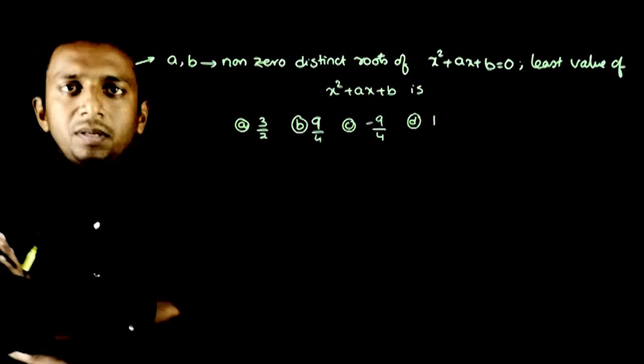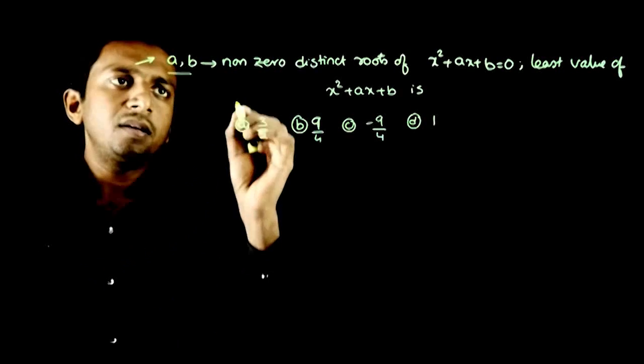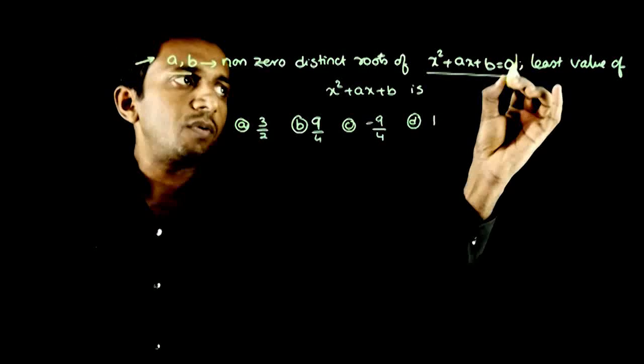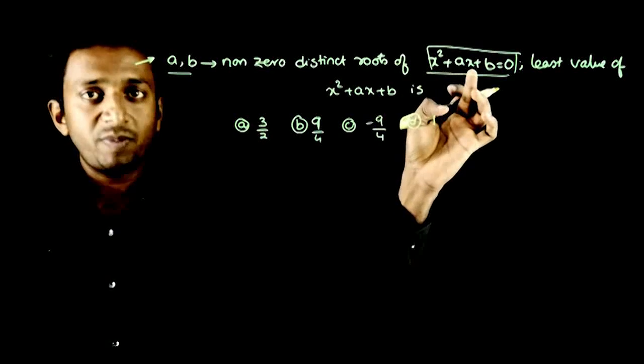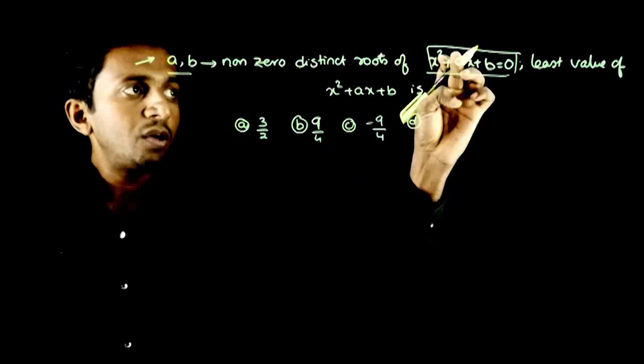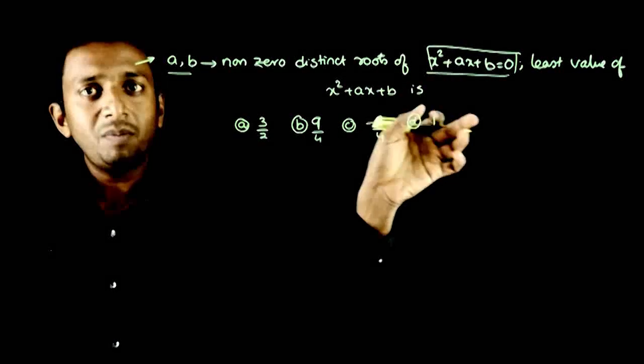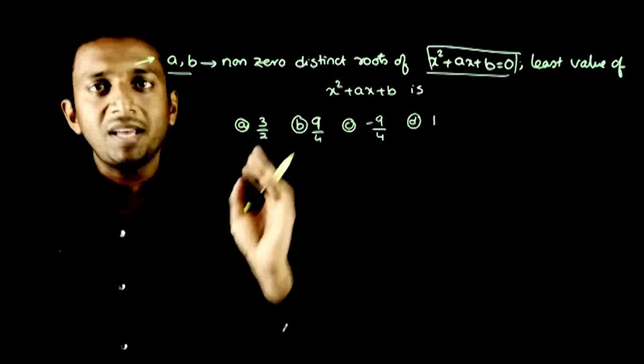Welcome students. In this question, A and B are two non-zero distinct roots of the equation x² + ax + b = 0. So the roots are a and b. This doesn't usually happen, but in this particular equation it's given that way. Then the least value of x² + ax + b is how much?